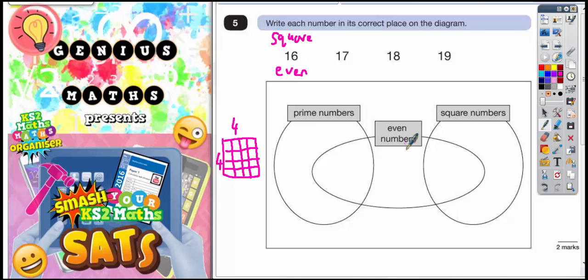So a square number and even, even is this oval here and square number is this circle here. So to be square and even, it's got to be in the overlapping bit, which is this bit that I'm sort of trying to hover over now. So the number 16 needs to go in there because it's inside the square numbers, but it's also inside the even numbers.